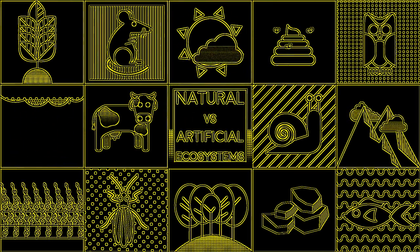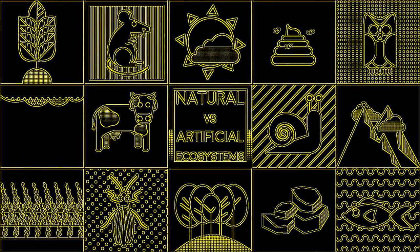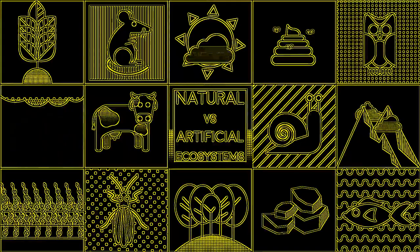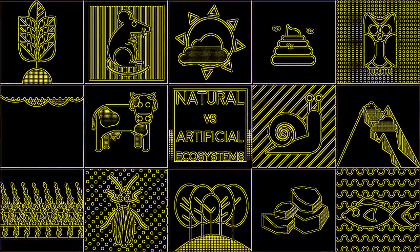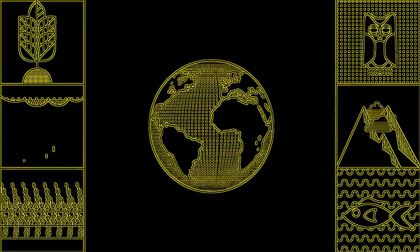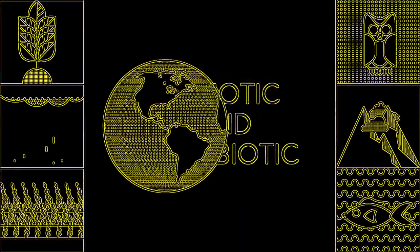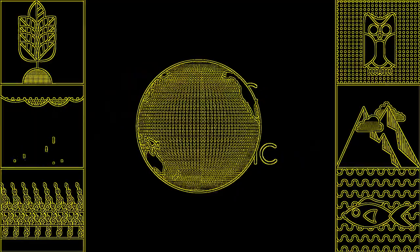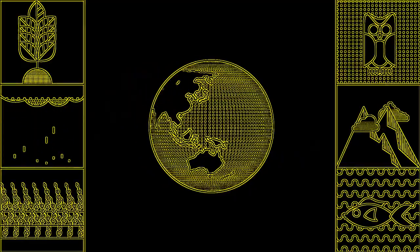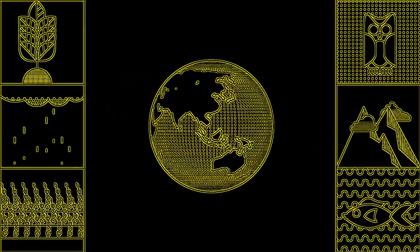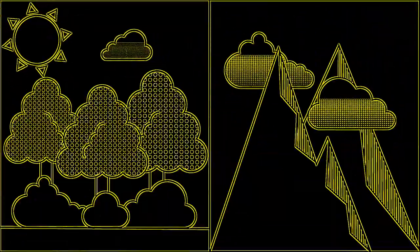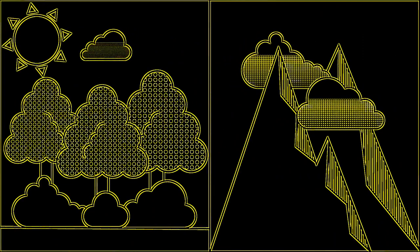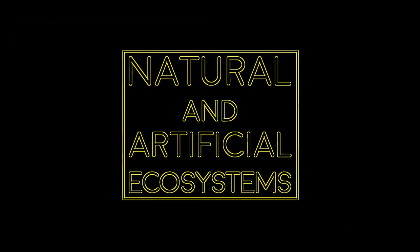Natural vs. Artificial Ecosystems. An ecosystem can be defined as a large, highly interconnected area of the planet that is composed of several different biotic and abiotic components. A good example of an ecosystem would be an entire forest or a mountain range. In this video, we will look at the difference between natural and artificial ecosystems.